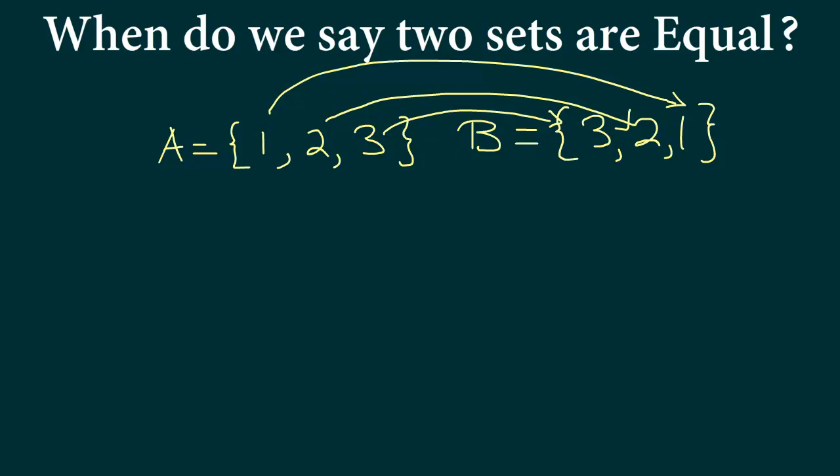Answer is no we cannot. Now we have to go the other way around and check if every element in B actually exists in A. So the number 3 obviously exists in A, the number 2 exists in A and the number 1 exists in A. So in this case we will say yes set A is indeed equal to set B.